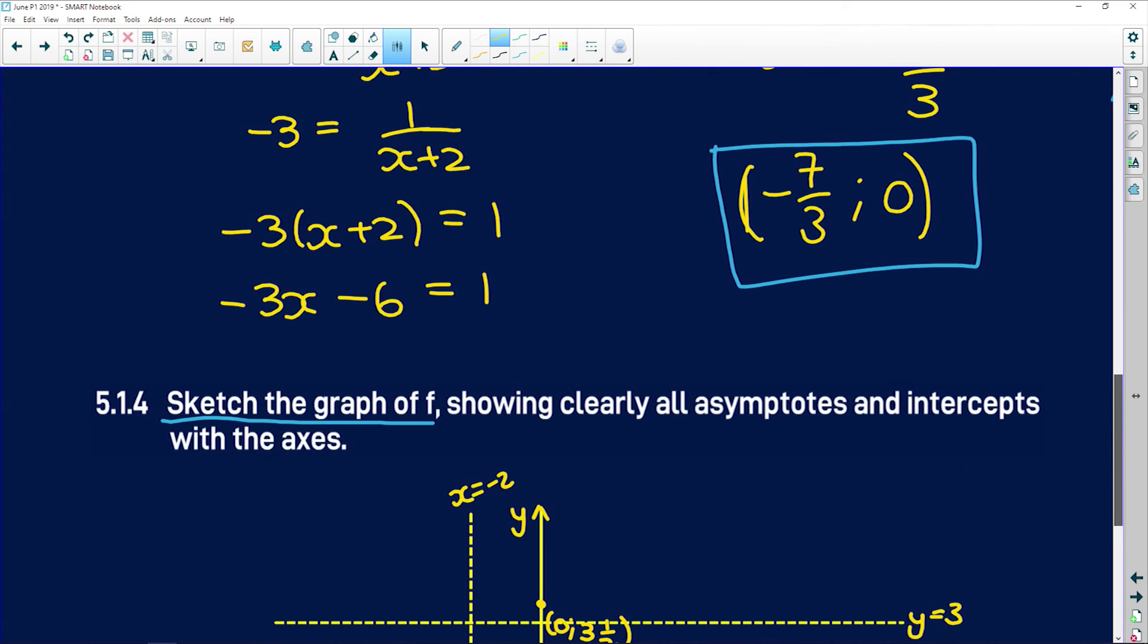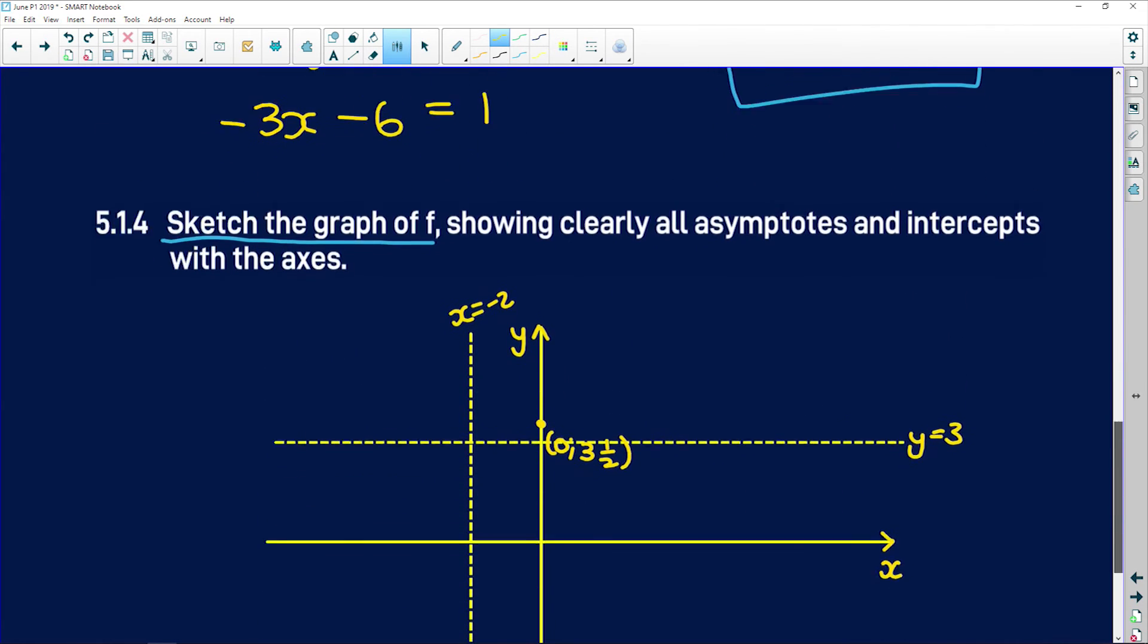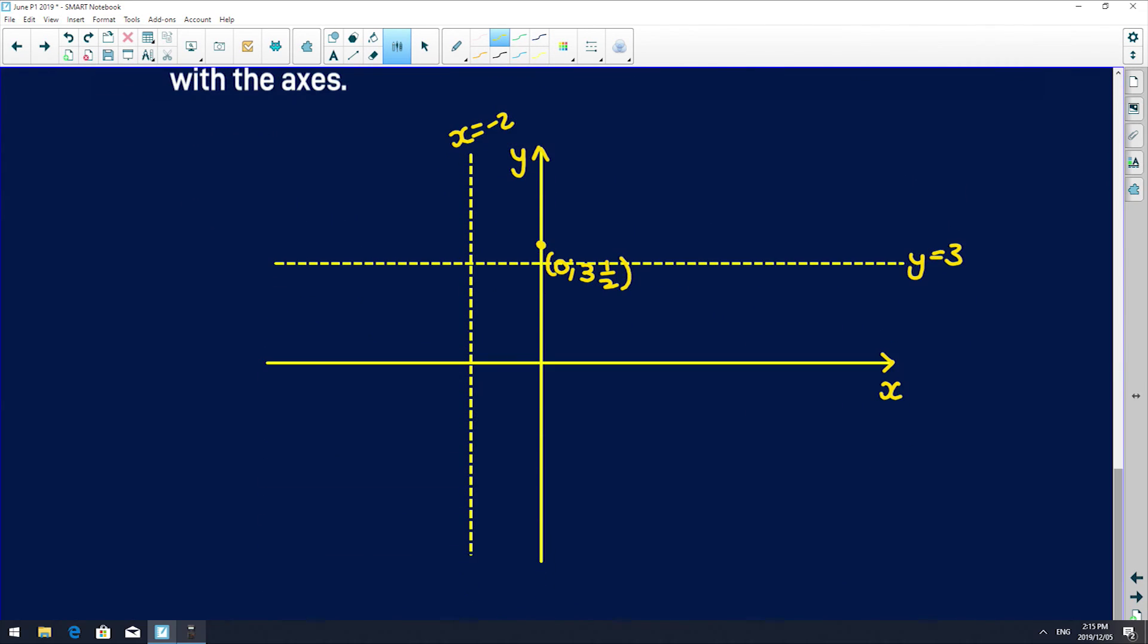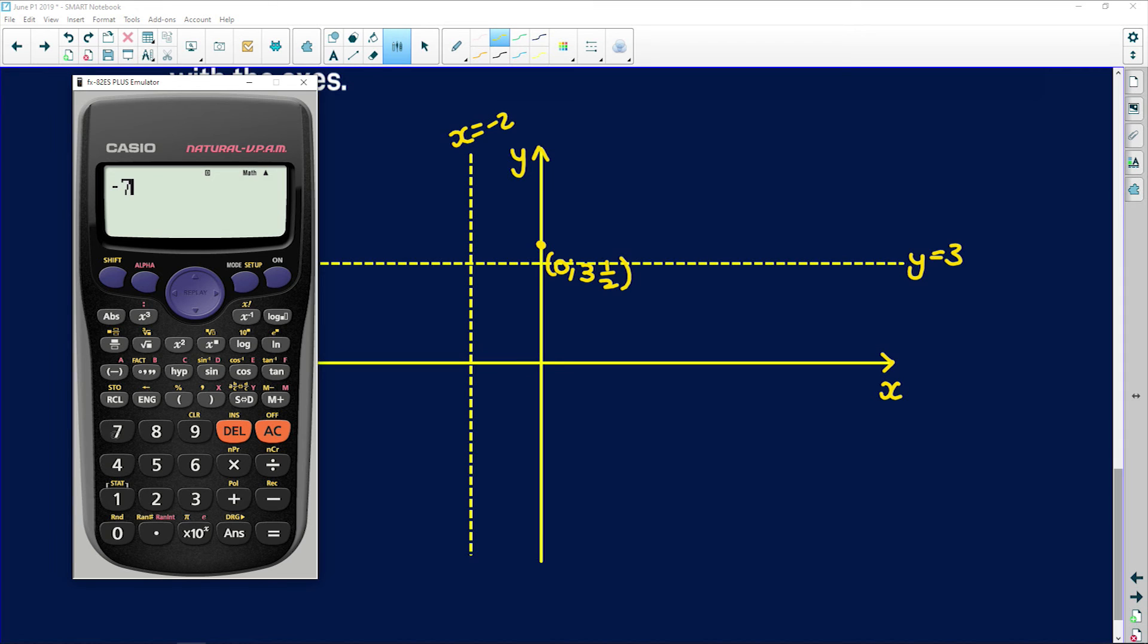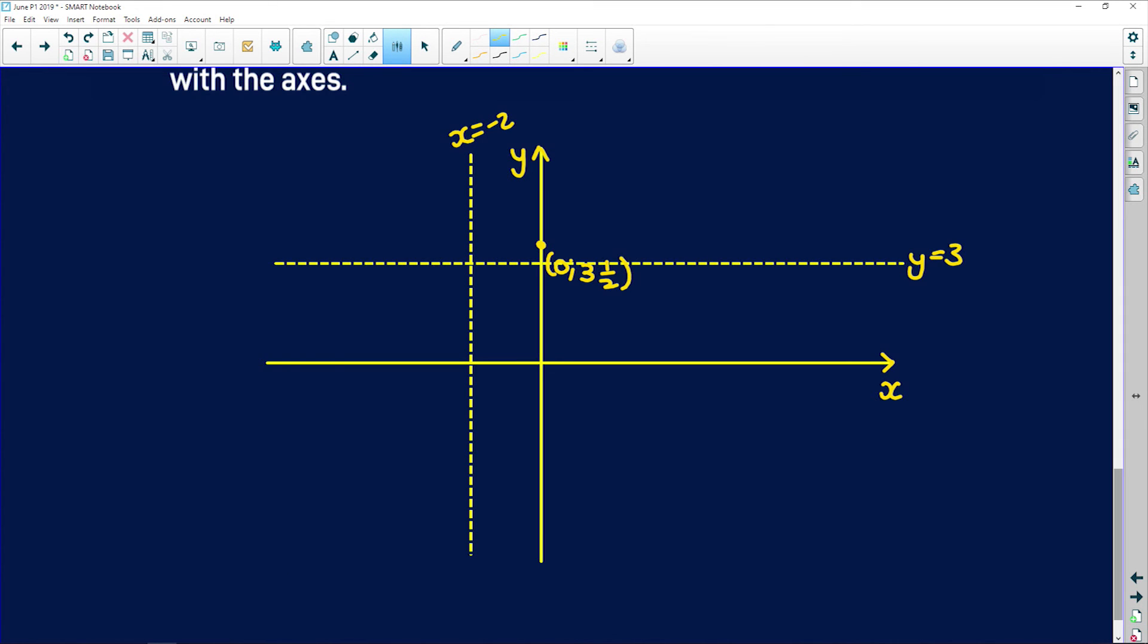And x-intercept, we find, sits at negative 7 over 3, which, let me just get into decimal form, negative 7 over 3 sits at 2 and a third. So this was x equals negative 2, so negative 2 and a third will sit about there. So negative 7 over 3 and 0. Now, remember how your hyperbola works. Let me write this off to the side so I don't intersect it: negative 7 over 3 and 0.